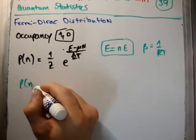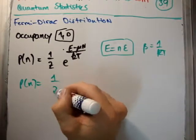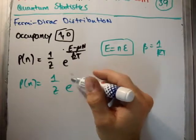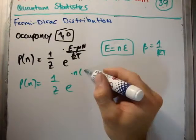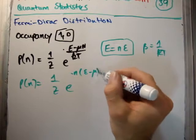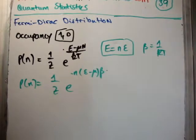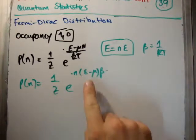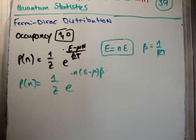So if we rewrite this, probability is equal to 1 over the grand partition function times e to the minus n(ε - μ)β. That's just another way of writing it. I'm sure you're already recognizing what's going on here with E minus μ.